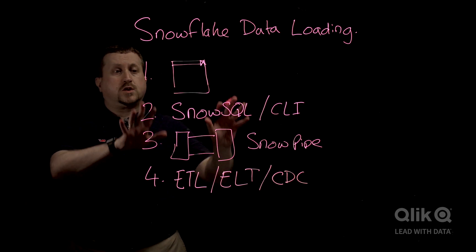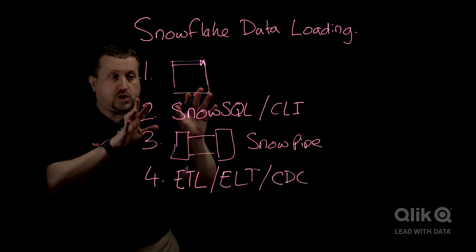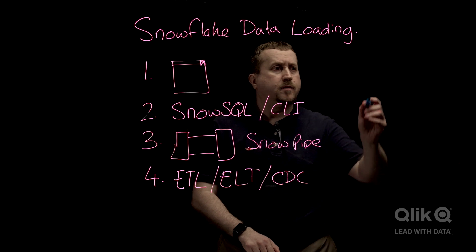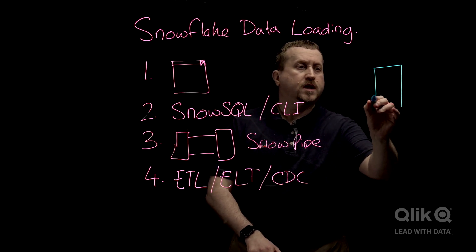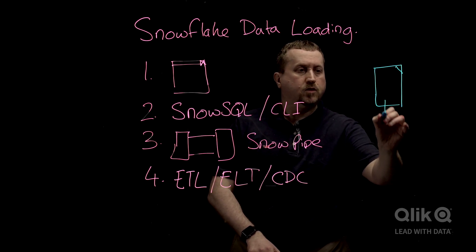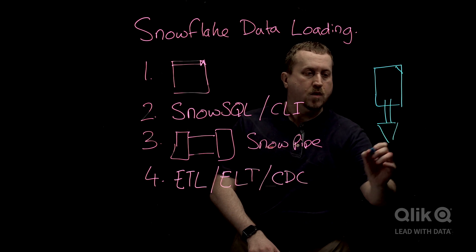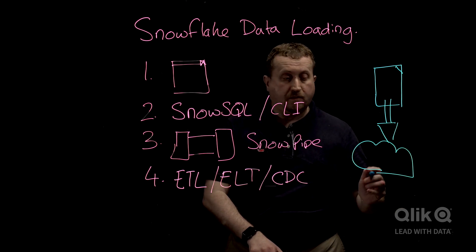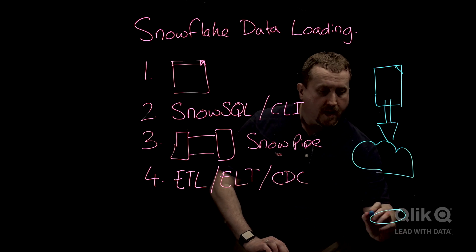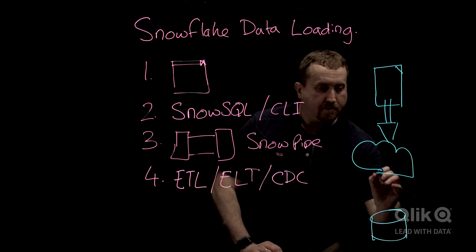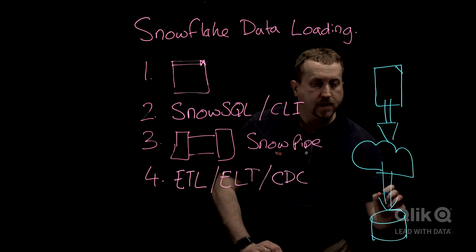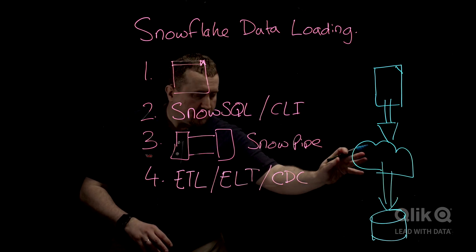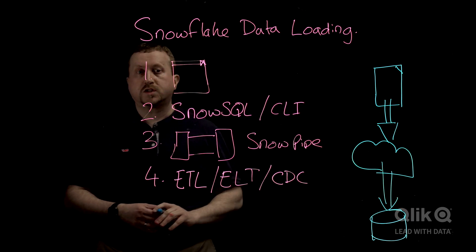Now, it doesn't matter which option you choose — the process is generally the same. You take your CSV file, you load it into web accessible storage that Snowflake can have access to. Then the second step of that process is to load the data from the web file locations into your Snowflake tables.